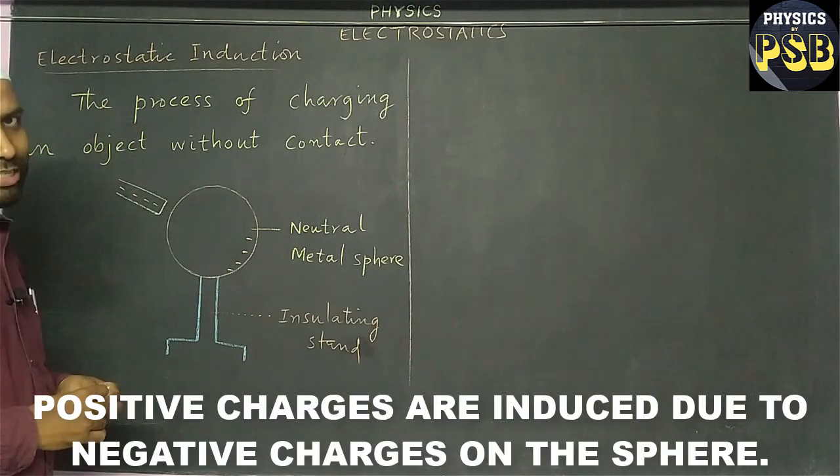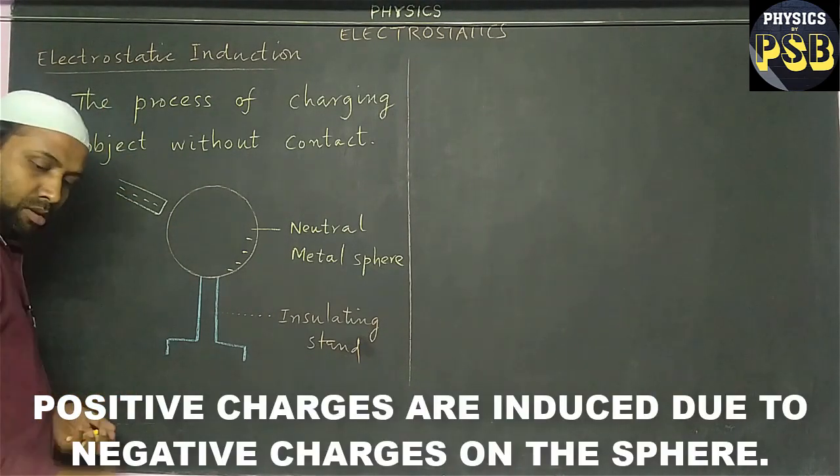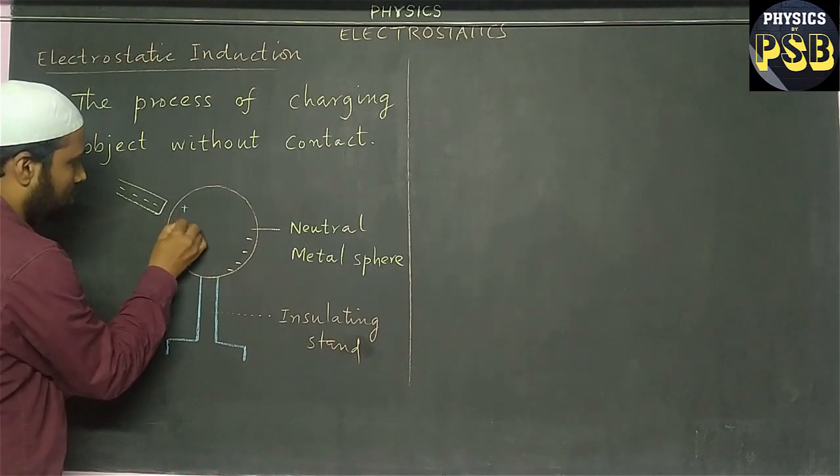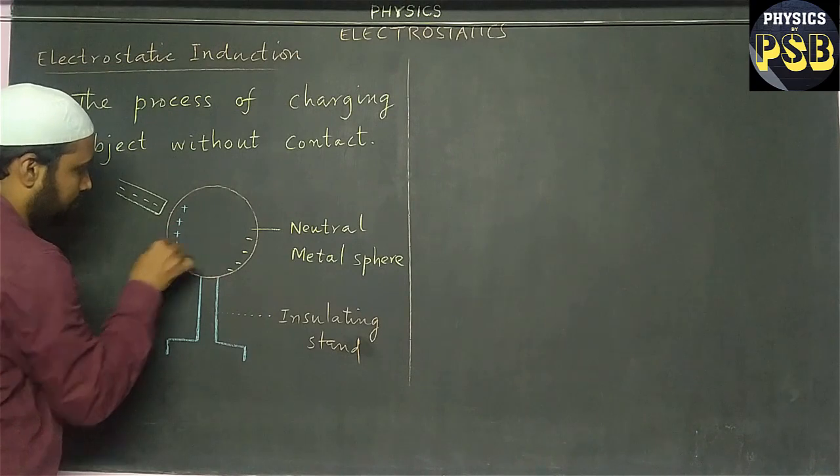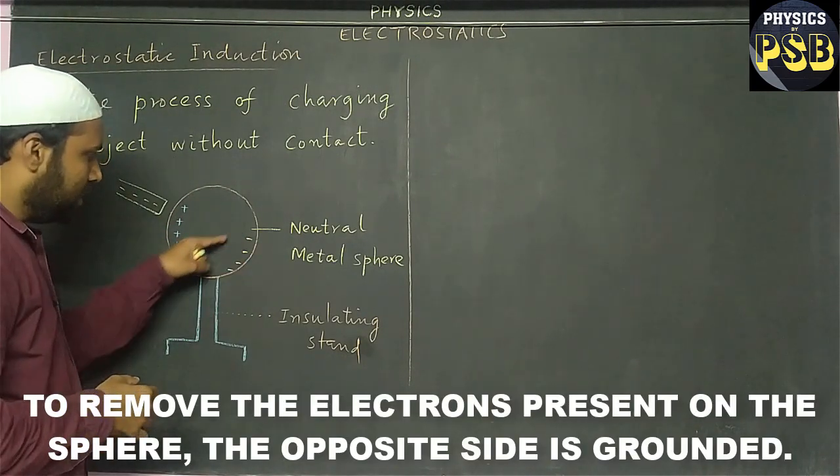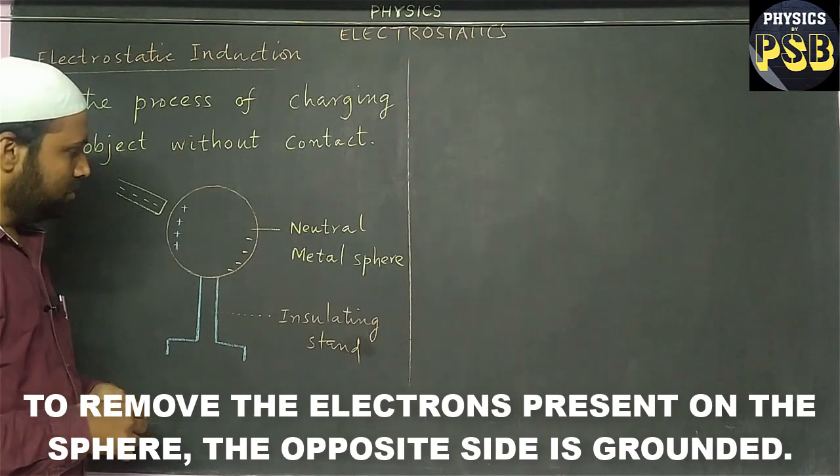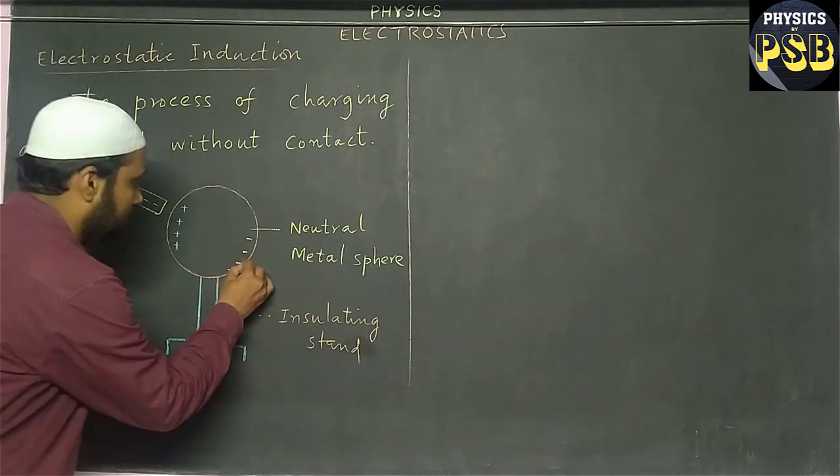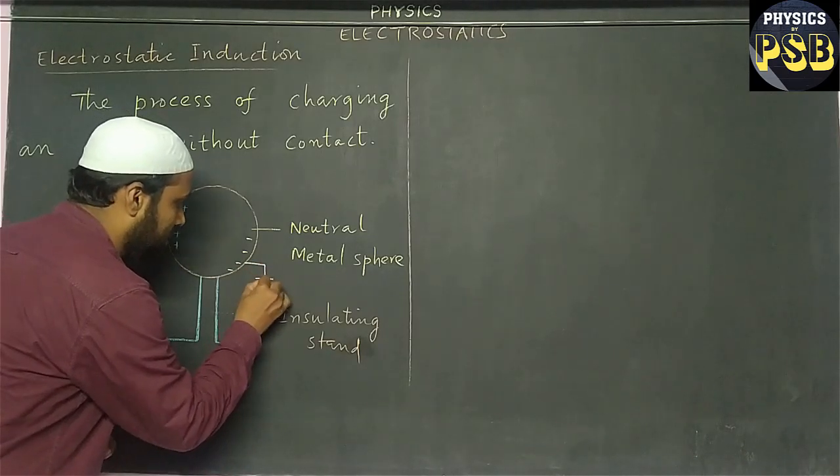As a result, due to electrostatic induction, the same number of positive charges are produced here. Now next, in order to remove these electrons from the metal sphere, I ground this.